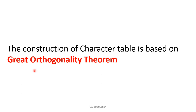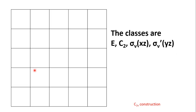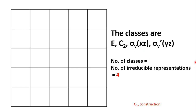In today's lecture, we are going to discuss the construction of the character table of the C2V point group based on the Great Orthogonality Theorem. The classes for the C2V point group are E, C2, σv(xz), and σv'(yz). The number of classes should be equal to the number of irreducible representations. Since the number of classes is 4, the number of irreducible representations will also be 4.